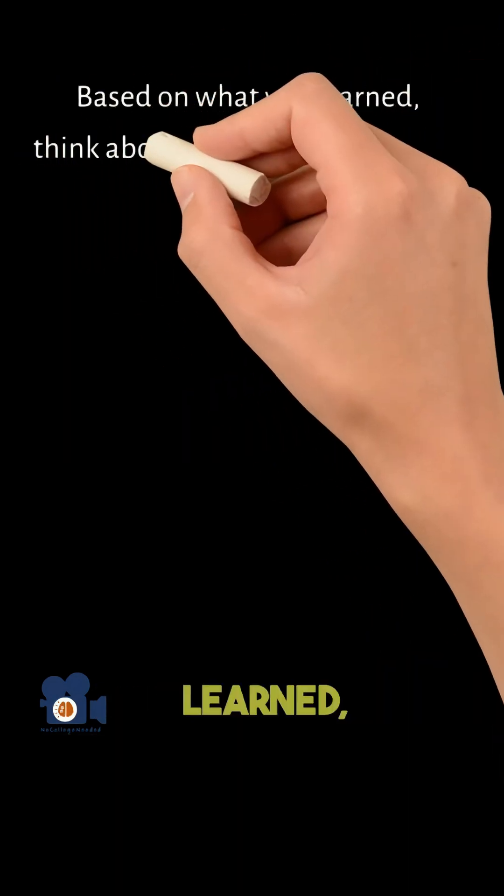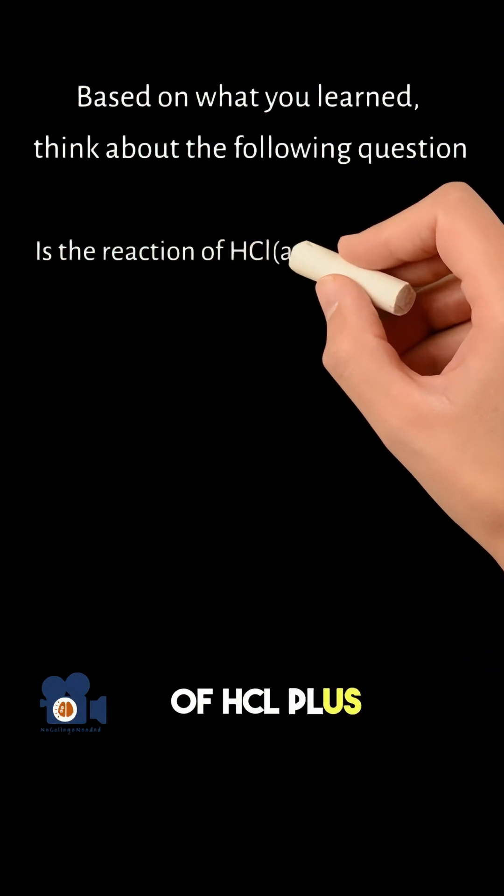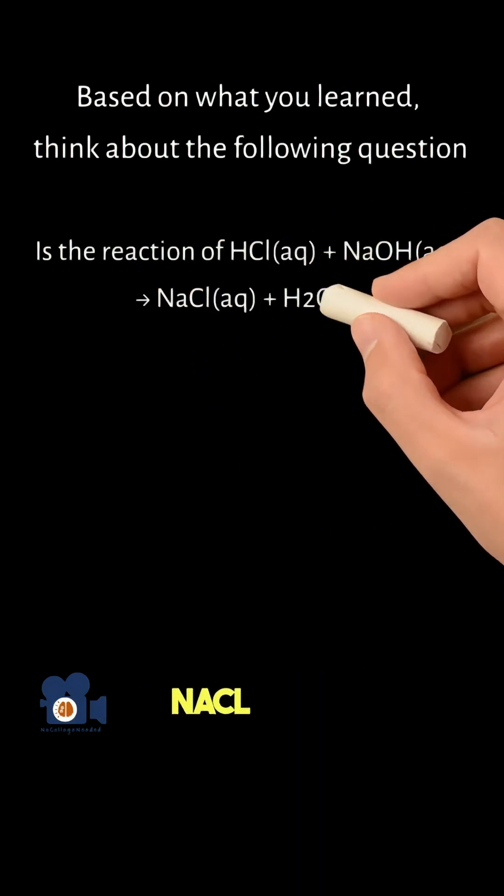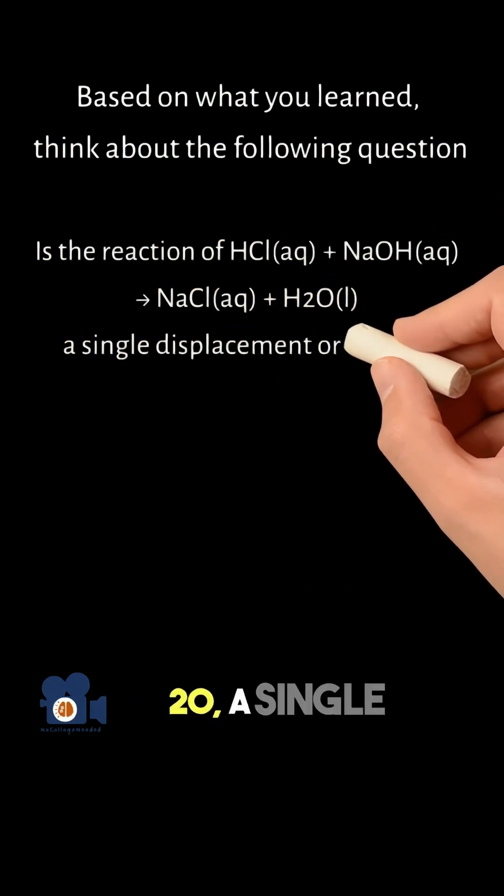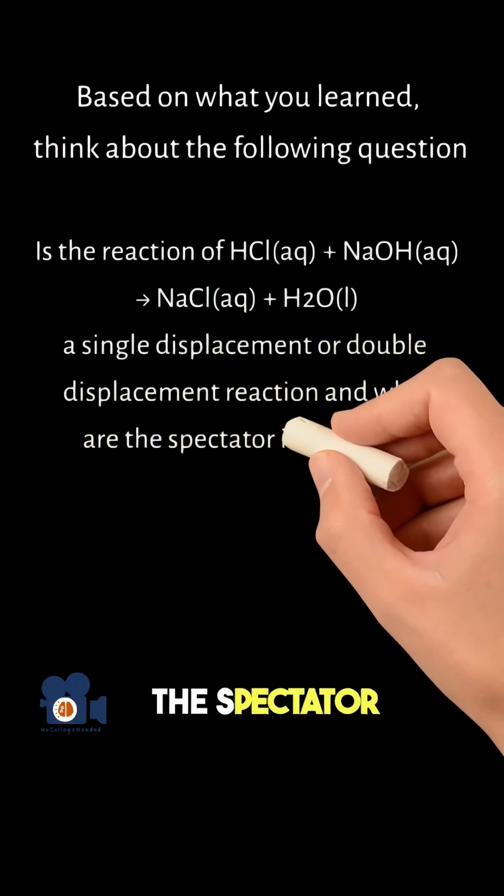Based on what you learned, think about the following question. Is the reaction of HCl plus NaOH going to NaCl plus H2O a single displacement or double displacement reaction? And what are the spectator ions, if any?